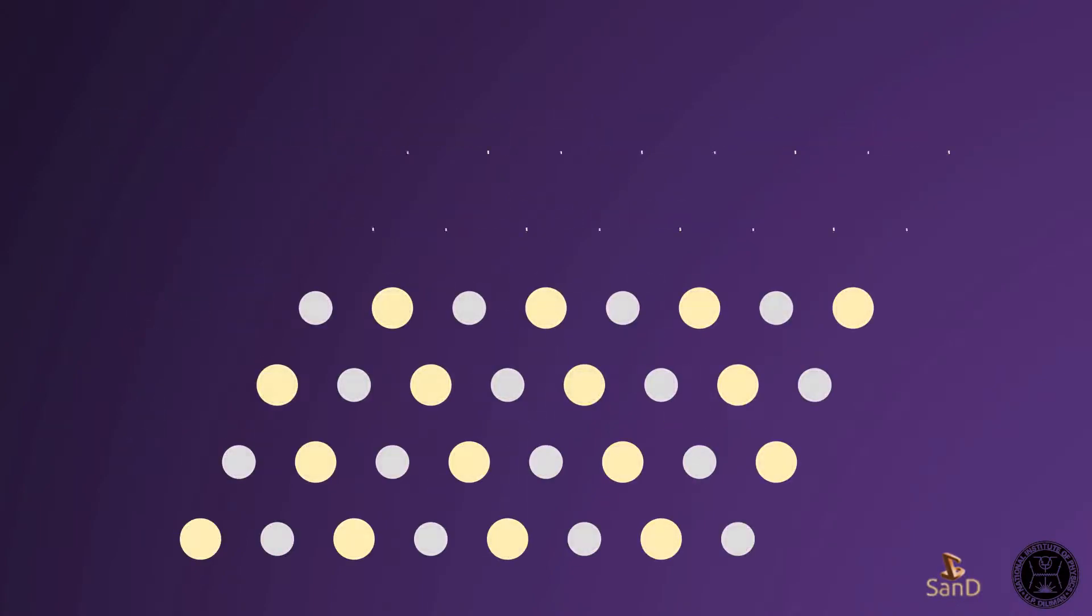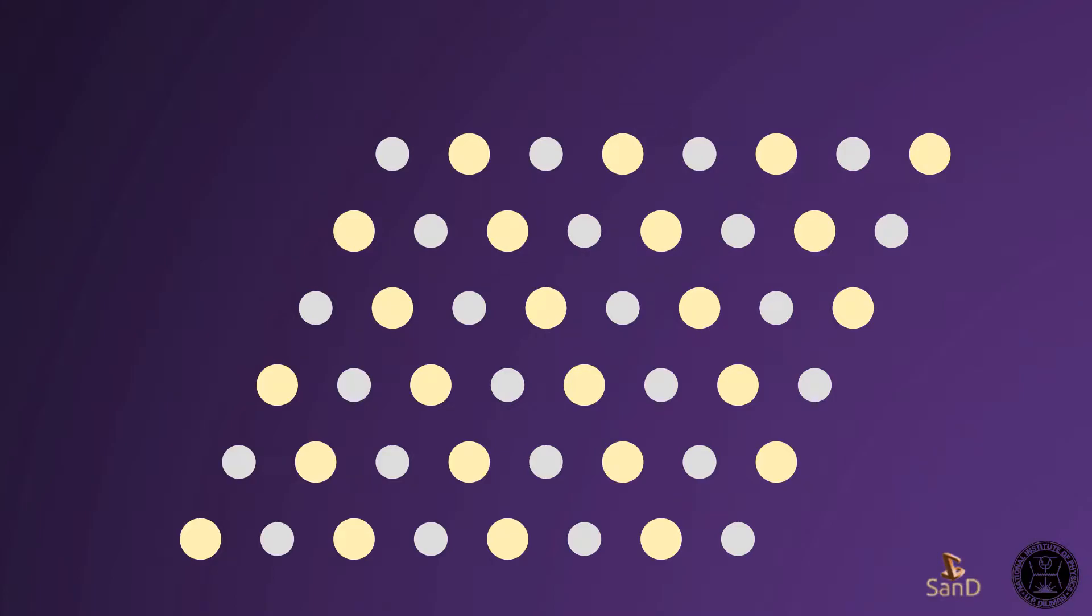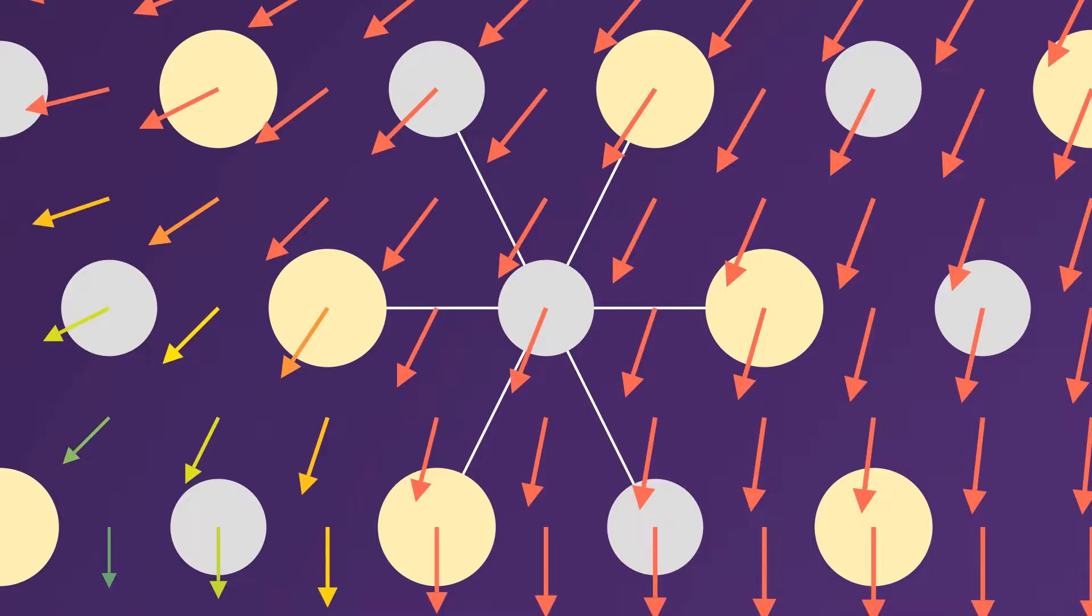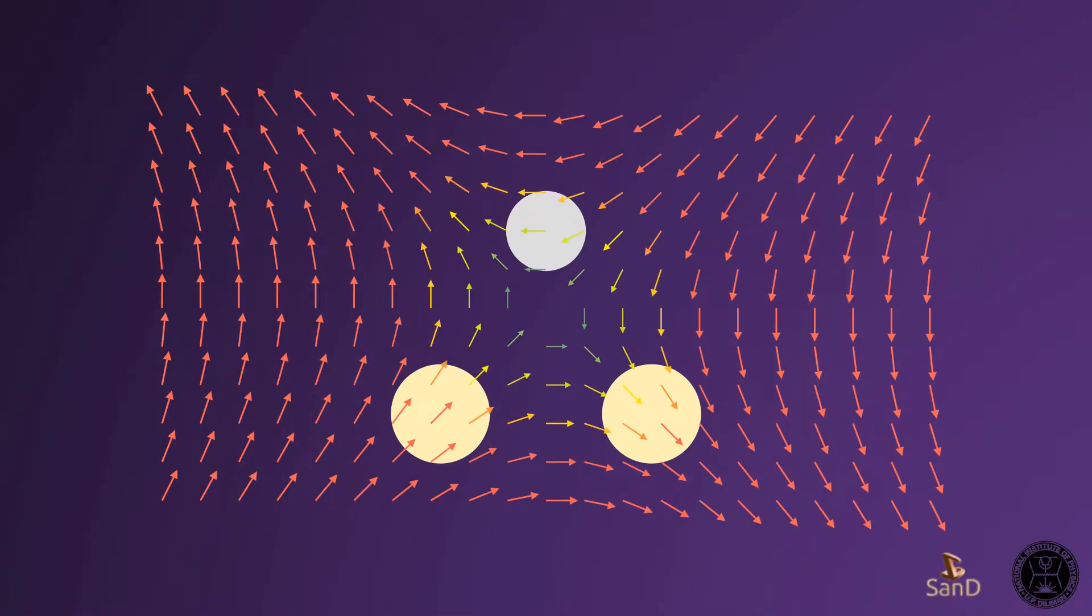Qubits do well with high-complexity combinatorial problems. Consider a repeating symmetric lattice, where the main interactions are that of nearest neighbors and magnetic fields. Focusing on the triangular sub-lattice, we ask, what makes this configuration stable?